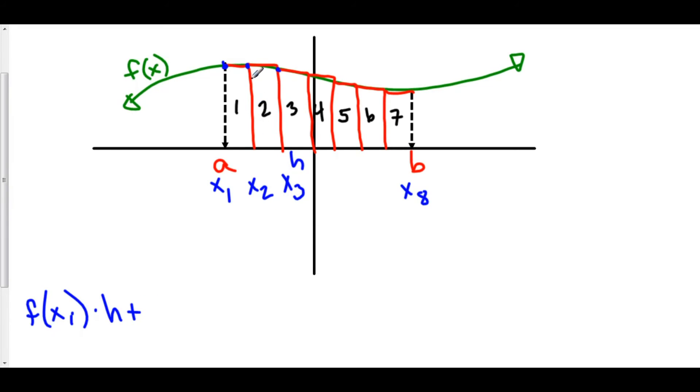So the area of the first rectangle is f of x sub 1 times h plus the second one, the left-hand side is x sub 2. So we have f of x sub 2 times h plus here's f of x sub 3 times h. And we do this all the way up through our last rectangle, which this right here is x sub 7. So here we're going to do f dot dot dot plus we go all the way up through f of x sub 7 times h.